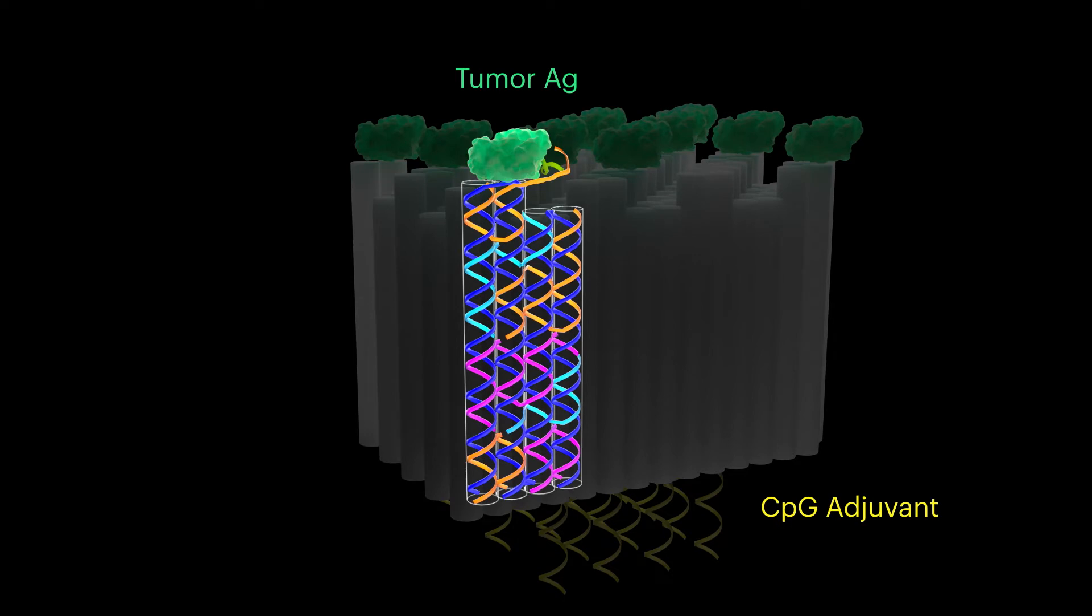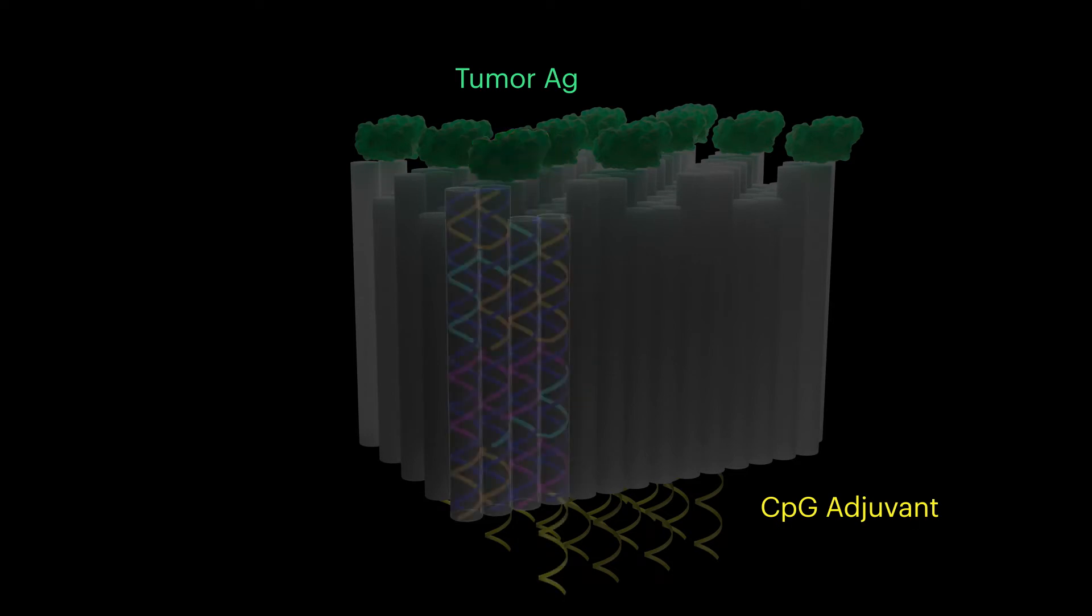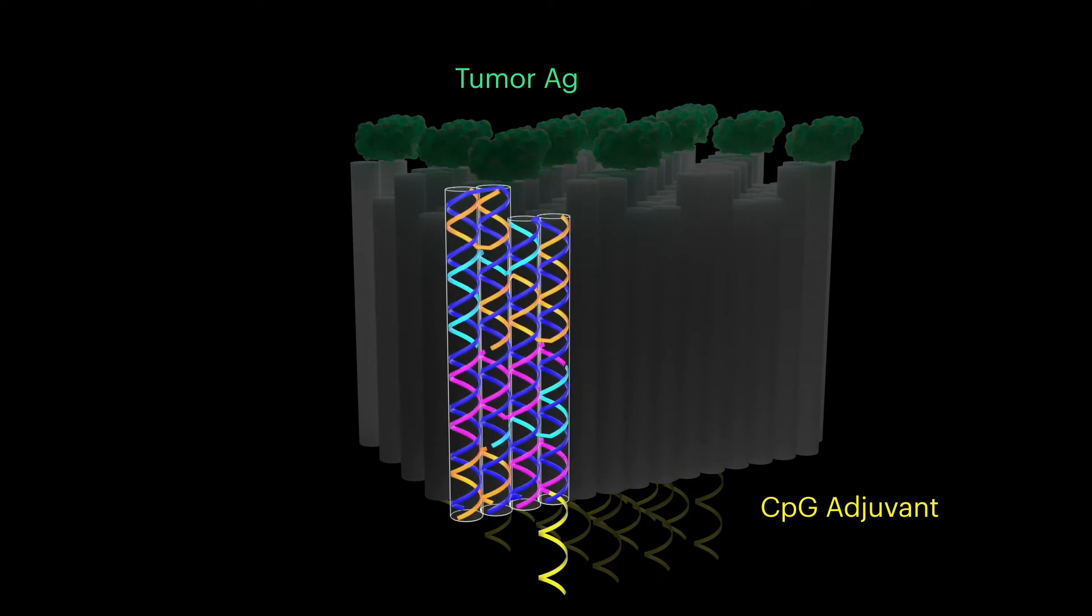While tumor antigens are conjugated to one side of the square-block, CPG molecules can be incorporated in specific patterns on the opposite surface.